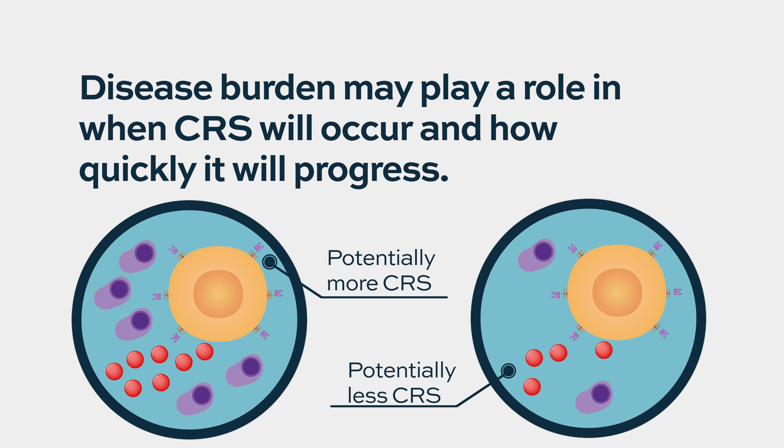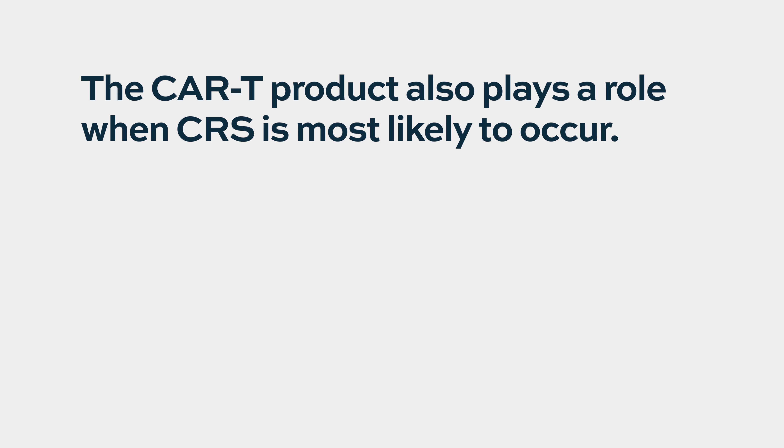When does CRS usually occur? This is probably a million-dollar question. Both the timing — when will you first notice that fever — and the kinetics — how quickly does it get serious if it is going to — can depend on a lot of factors. Across different types of CAR-T therapy, including ones on clinical trial, our group has researched this and found that disease burden may play a role. Patients who have a lot of myeloma cells detectable by bone marrow biopsy or by extramedullary plasmacytomas may have more CRS and more rapid CRS.